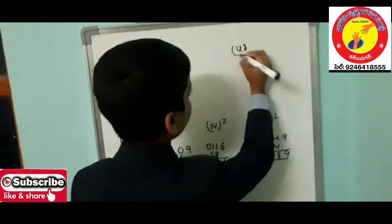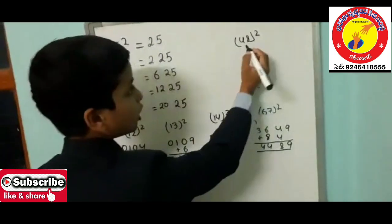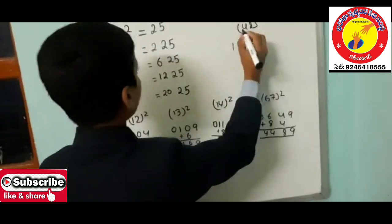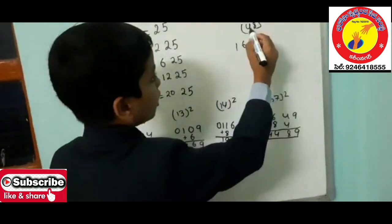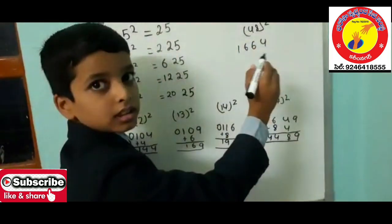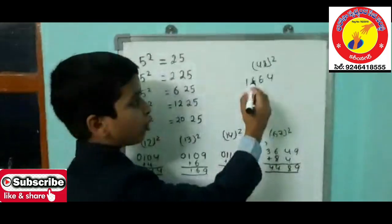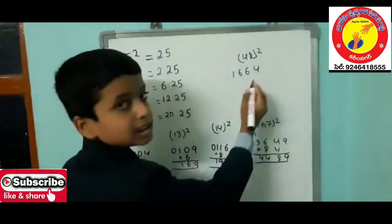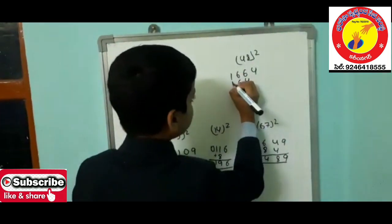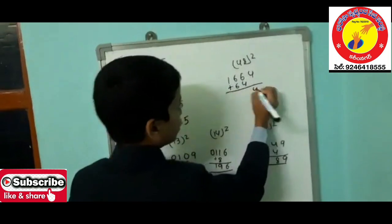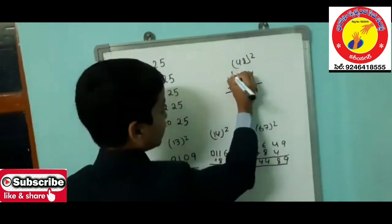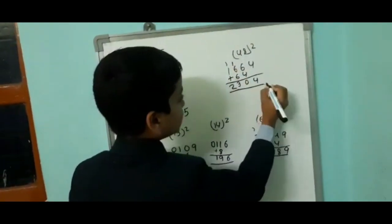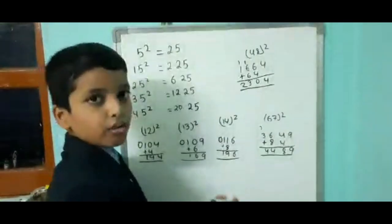For 48 squared: 4 squared is 16. 8 squared is 64. Multiply the digits: 4 times 8 is 32, and 32 times 2 is 64. Leave 1 place and write 64 here. Add them: 4, 6 plus 4 is 10, write 0 with 1 carry, 6 plus 6 is 12, plus 1 carry is 13, write 3 with 1 carry, then 2. Therefore 2304 is the square of 48.